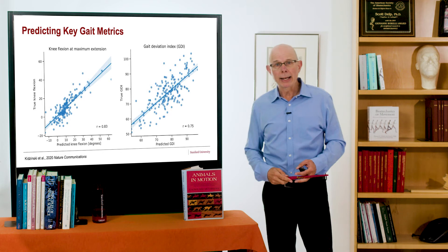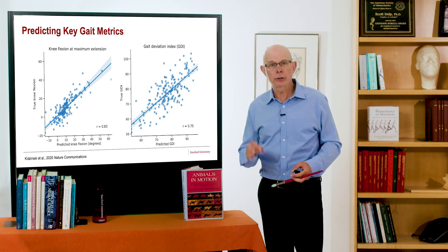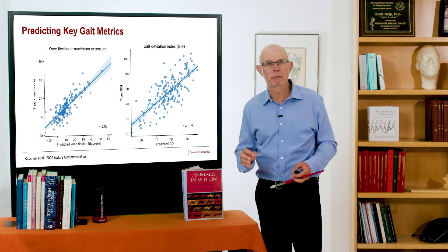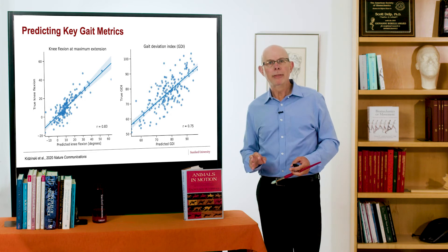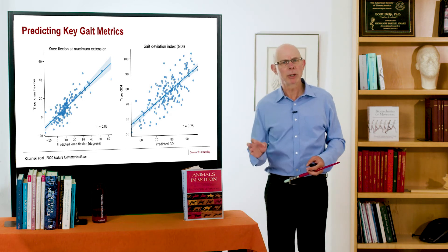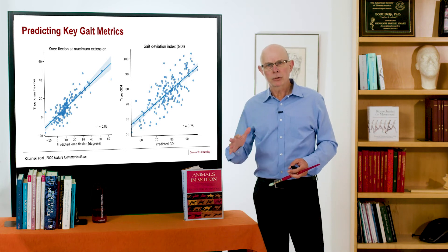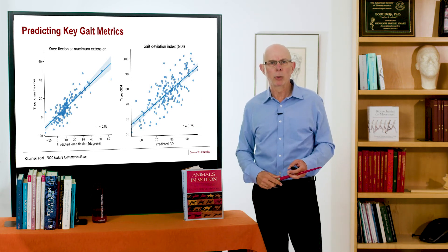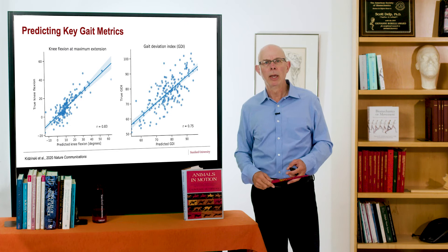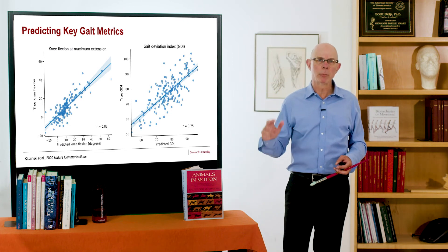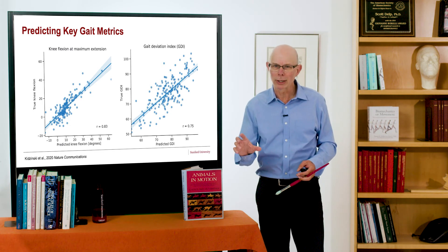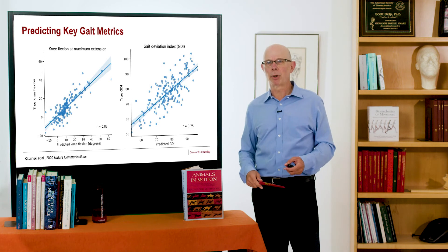We also looked at gait deviation index, and here you see a correlation of 0.75, a little bit lower than the prediction for knee flexion angle, but we don't expect perfect correlation. So still quite high considering that we only used a single plane video and the fact that the key points came from OpenPose models that were not really trained perfectly.